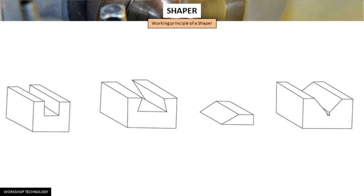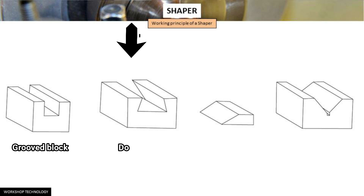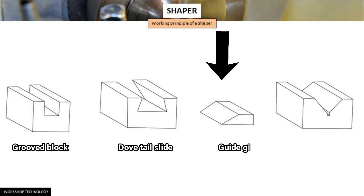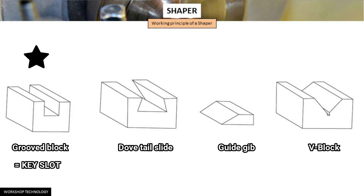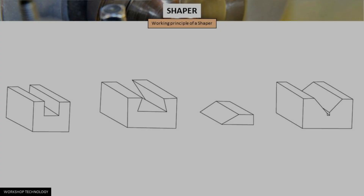Let's take a look at some of the surfaces produced by a shaper. Here, this one is a crude block, this one is a turtle slide, this here is a kite kib, and this here is a V-block. This crude block is sometimes also known as a key, and this one is a kite.